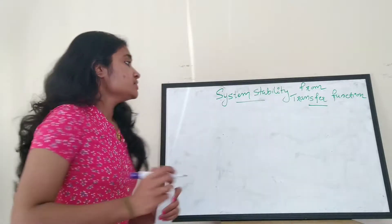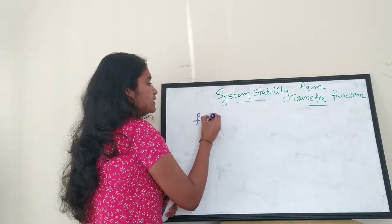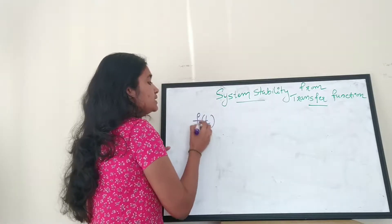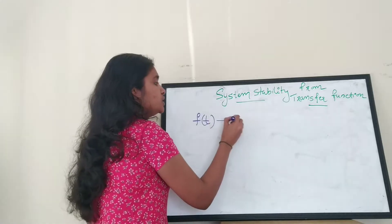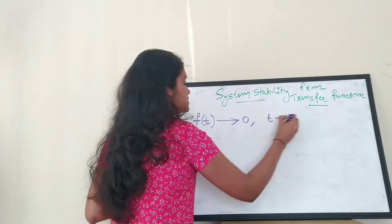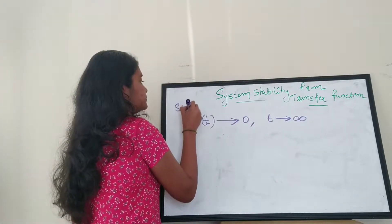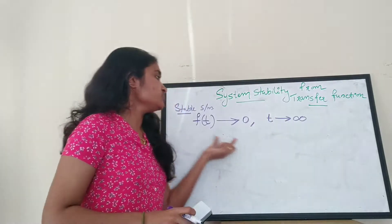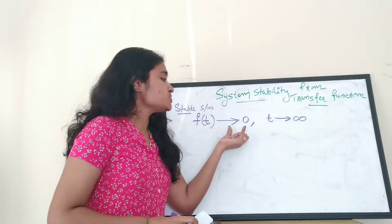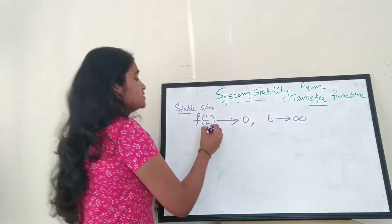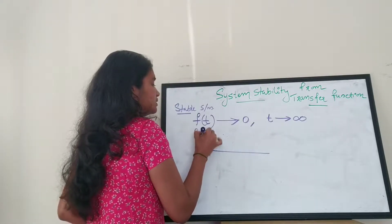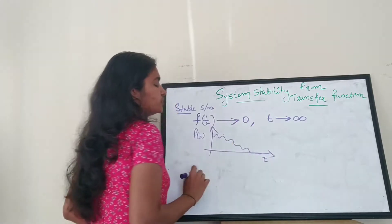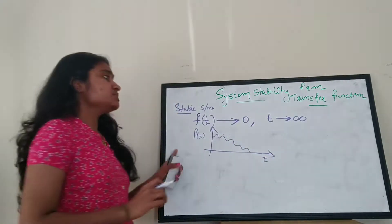So what is a stable system? The impulse response is always a function of time. Let f(t) be the impulse response of a system. If f(t) tends to zero as time tends to infinity, then such a system is called a stable system. If you plot the graph of f(t) versus t, the system function will settle to zero as the time tends to infinity — this is how a stable system looks.